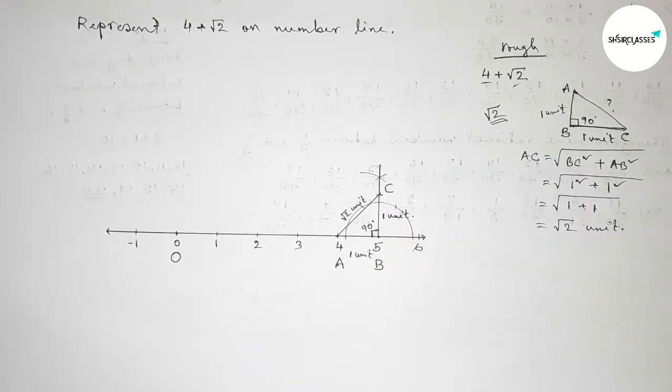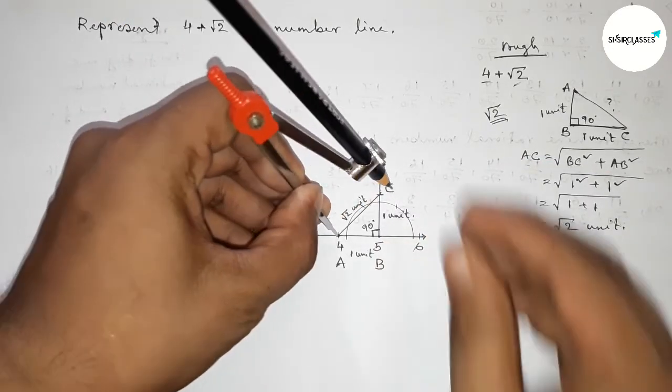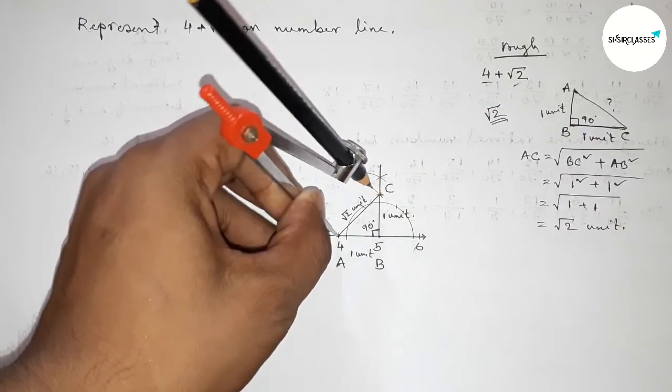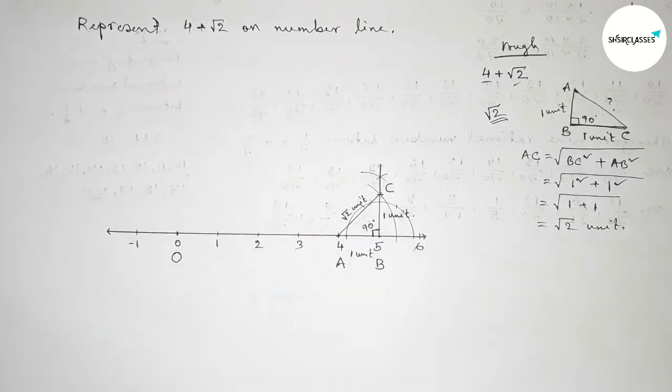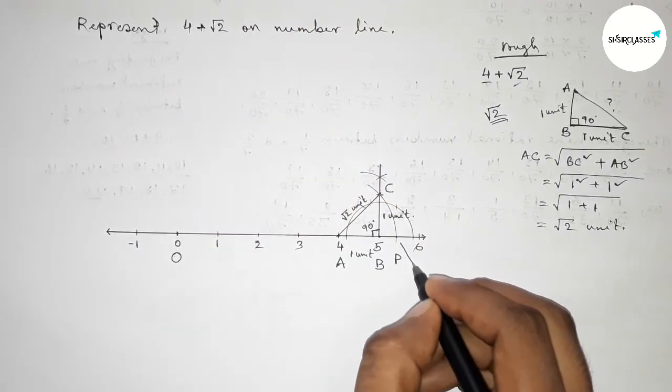Now taking the length AC equal to root 2 by using compass by this way, and drawing an arc through the point C which meets the number line here at a point P. So this is 4 plus root 2 on the number line.